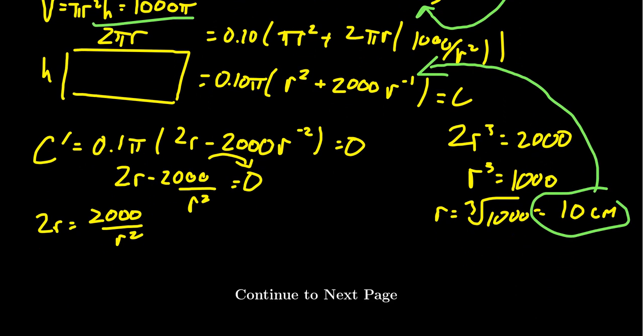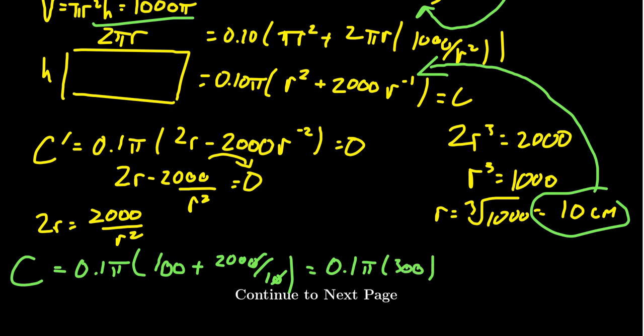The cost equals 0.1π times (10² + 2000/10) = 0.1π(100 + 200) = 0.1π(300) = 30π.